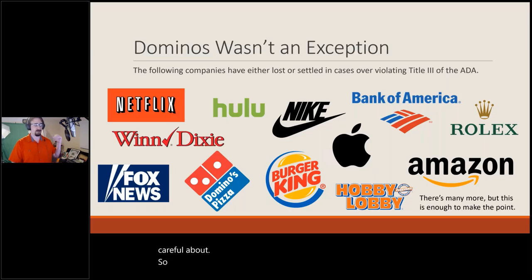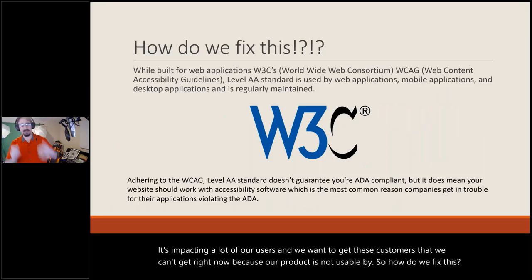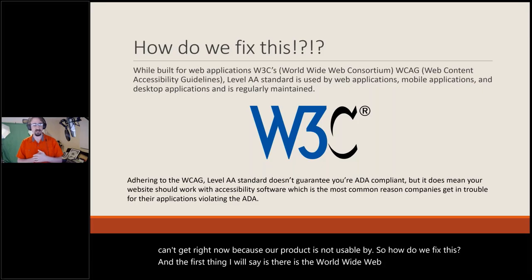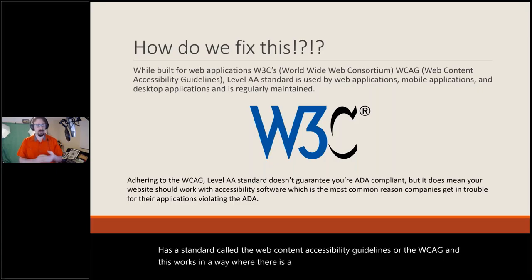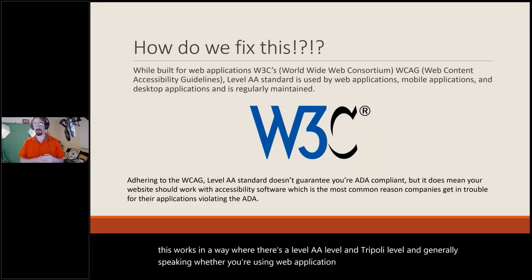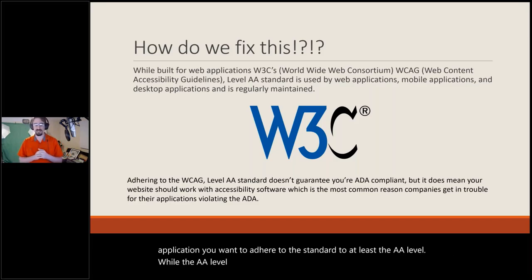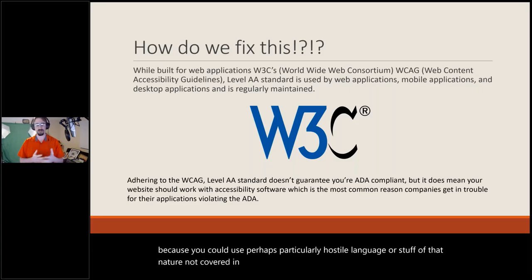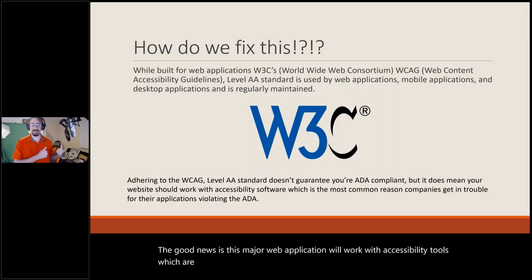So we have a legal obligation, it's impacting a lot of users, and we want those customers we're currently losing because our product is unusable by them. The World Wide Web Consortium's W3C WCAG has a standard called the Web Content Accessibility Guidelines, or WCAG, with A-level, AA-level, and AAA-level. Whether you're using a web, mobile, or desktop application, you want to adhere to at least the AA-level standard. Meeting AA-level doesn't guarantee zero ADA complaints, but it means your application will work with accessibility tools — which is what most of those companies got in trouble for.